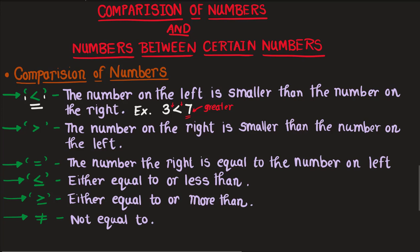The next sign indicates the number on the right is smaller than the number on the left. For example, seven is greater than three. Here, three is on the right side and is the smaller number, while seven is on the left side and is greater. The open mouth still faces seven.